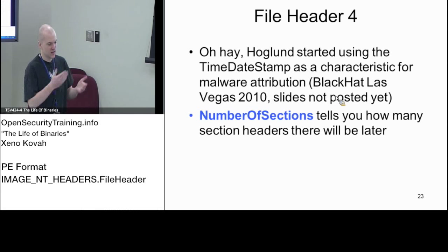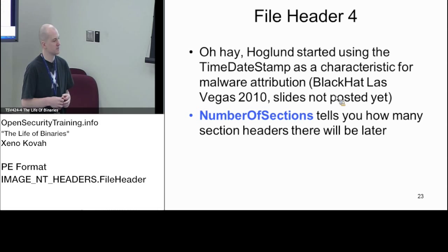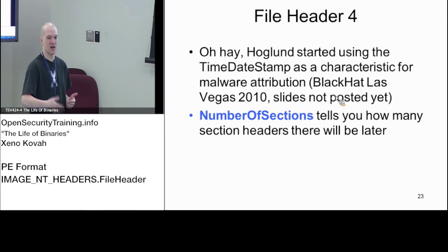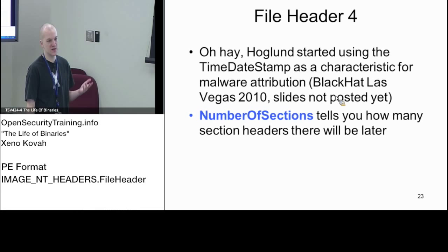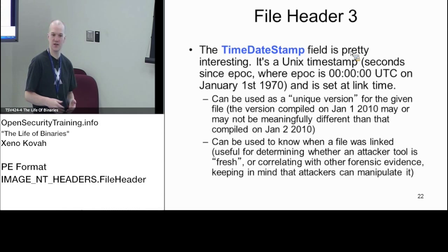There was an example talk where the speaker was saying: here are all these different chunks of the PE file format that kind of help indicate when an attacker compiled something - what the compile directory was and things like that. He was talking about attribution - circumstantial attribution - where if an attacker is not aware of these fields, they're going to leave behind this evidence. Time-date stamp is a big one because it will say when this file was compiled. It's been used for things like tracking Stuxnet infections.